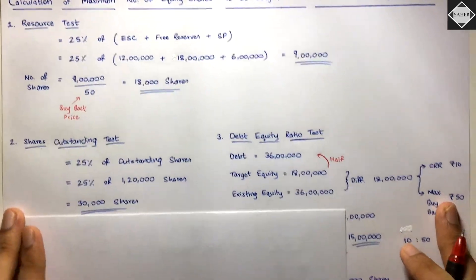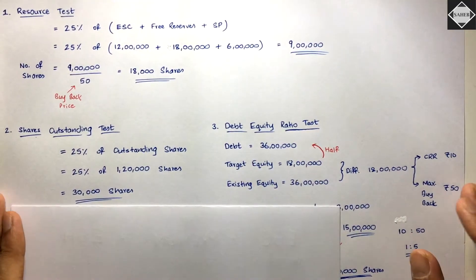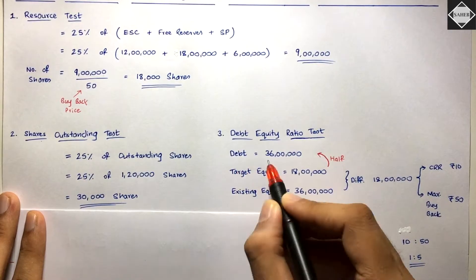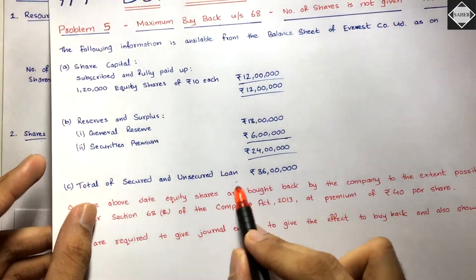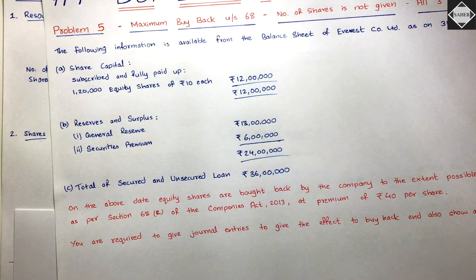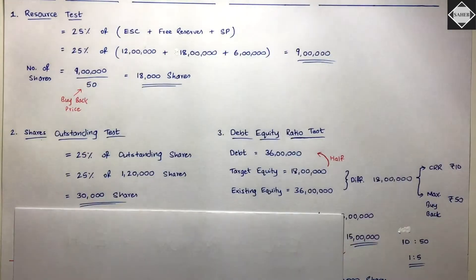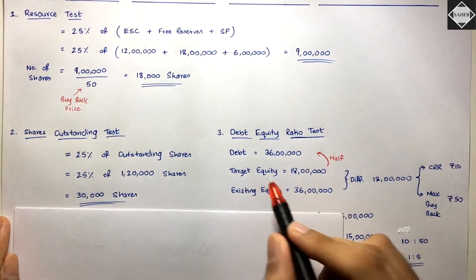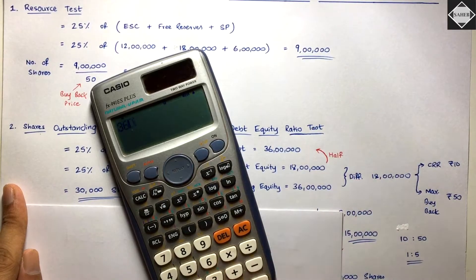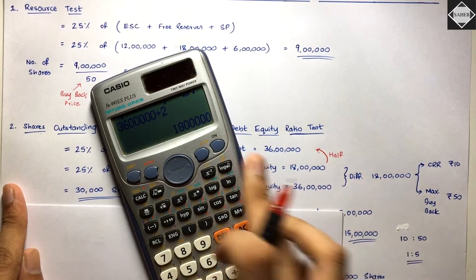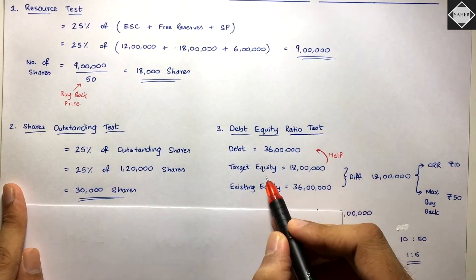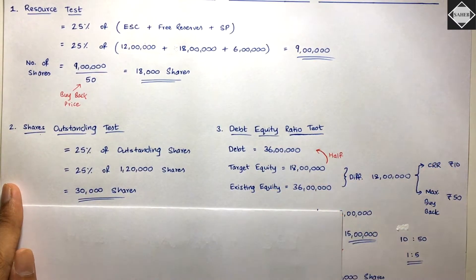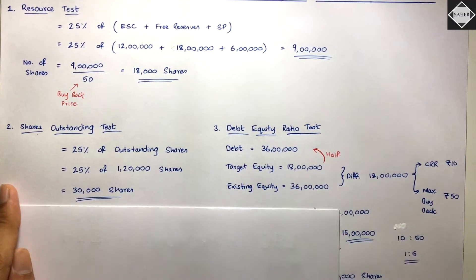For the Debt-Equity Ratio Test, first take the debt: ₹36 lakhs as given in the balance sheet - total secured and unsecured loans. Debt includes secured, unsecured, short-term, and long-term loans. Then calculate the target equity, which is half of the debt: 36 ÷ 2 = ₹18 lakhs. That's the minimum equity you must maintain after buyback to preserve the 2:1 ratio.